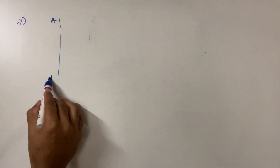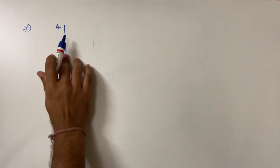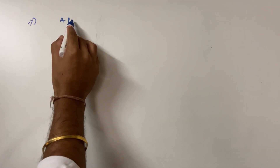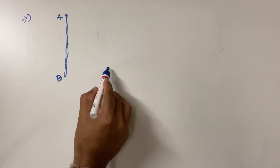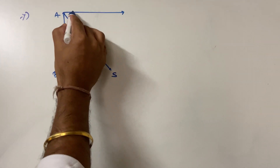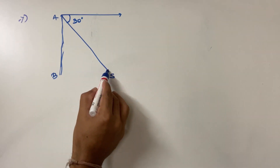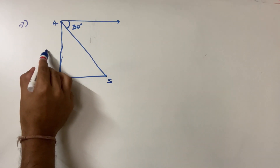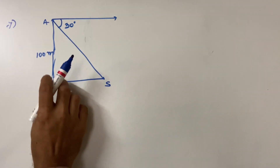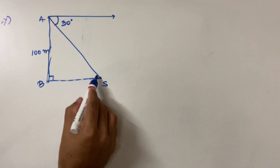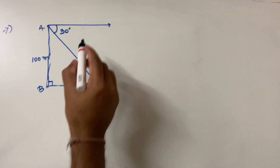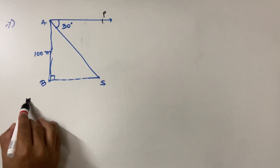This is AB representing the lighthouse. From the top of a lighthouse, an observer looks at a ship and finds the angle of depression. He looks at the ship — this is the normal vision, and the angle of depression is 30 degrees. The height of the lighthouse is 100 meters. You have to find how far the ship is from the lighthouse.